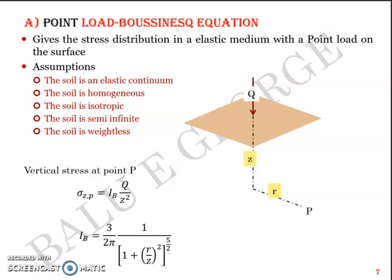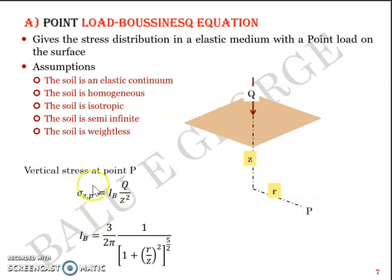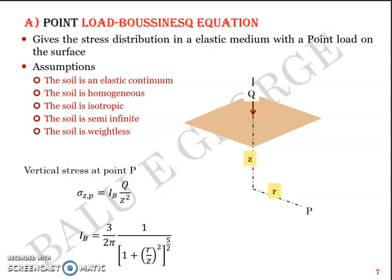IB is equal to (3/2π) × 1 / [1 + (R/Z)²]^(5/2). From the equation, as Z increases sigma decreases, and as radial distance R increases sigma decreases. That's the key takeaway from this equation.